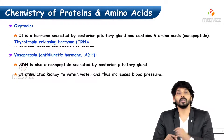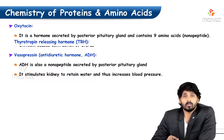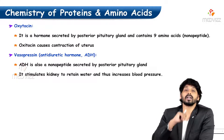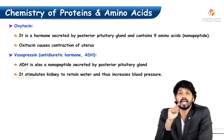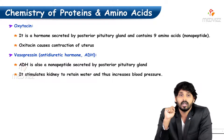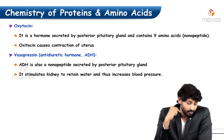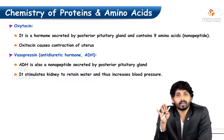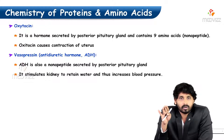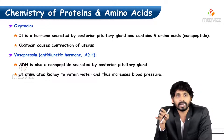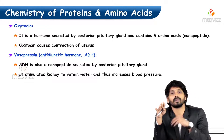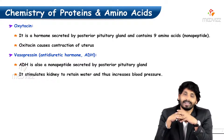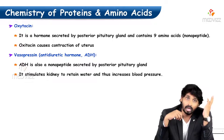Oxytocin is a hormone secreted by the posterior pituitary gland and contains 9 amino acids — that means it is a nonapeptide. The main function of oxytocin is to cause contraction of the uterus and the mammary gland for milk production and ejection.